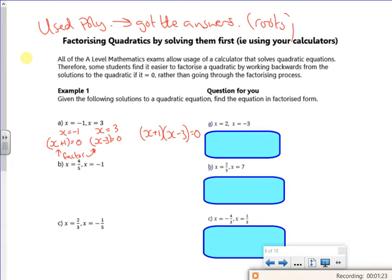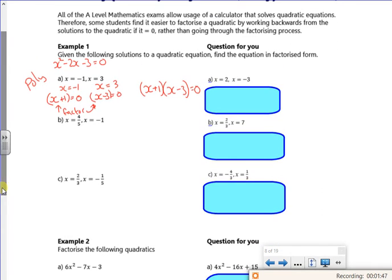So the idea for this is say, for instance, I'd started off with x squared minus 2x minus 3 equals 0. I could have put it into poly and I would have got out the answers minus 1 and 3, but just for completeness, I would have written down the factors in between. So there's one there for you to have a go at.